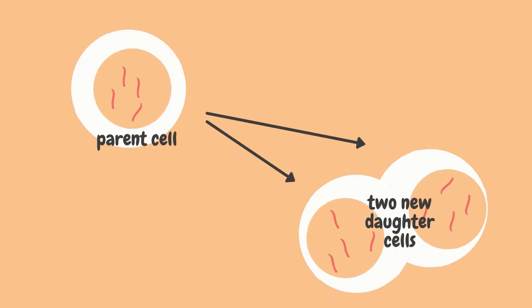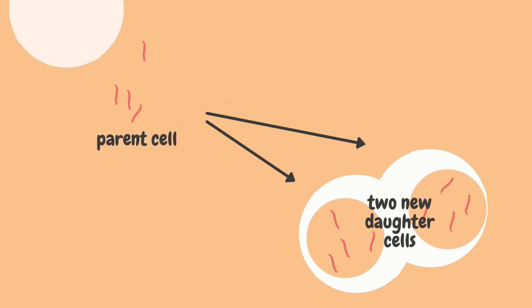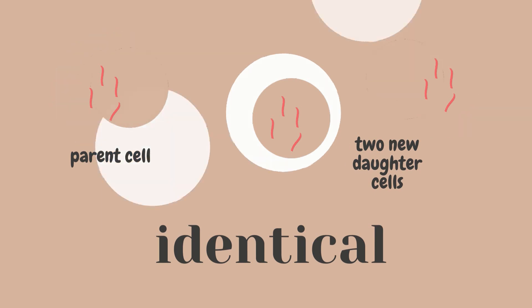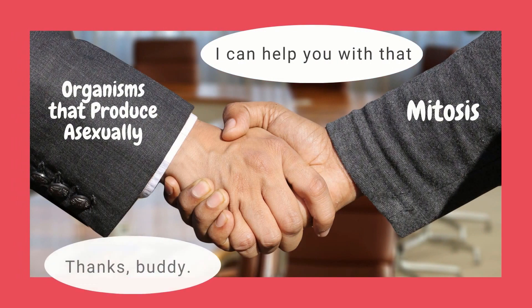It splits chromosomes during cell division and generates two new daughter cells that have the same exact copy of DNA as the parent chromosomes. The daughter cells are now formed as genetically uniform and identical to the parent as well as to each other. For organisms that only reproduce asexually, mitosis is the key process that sustains their populations.